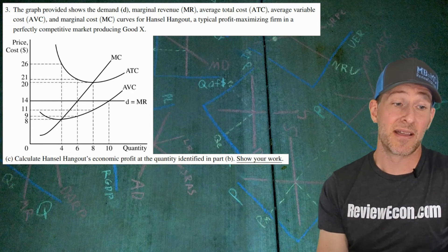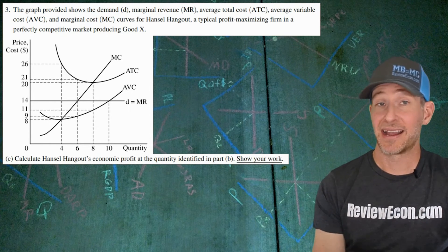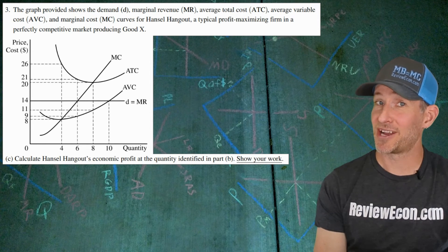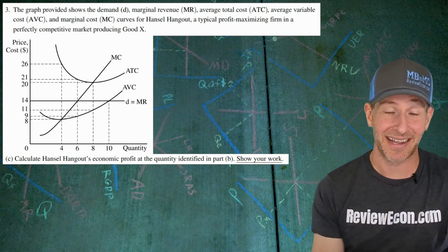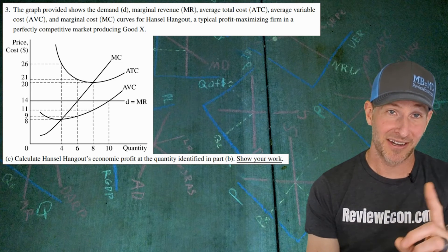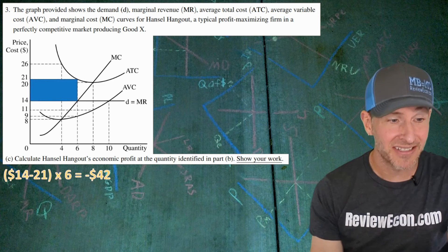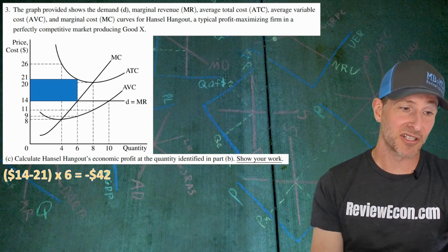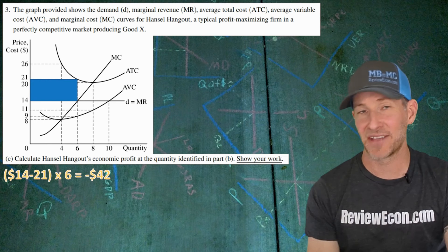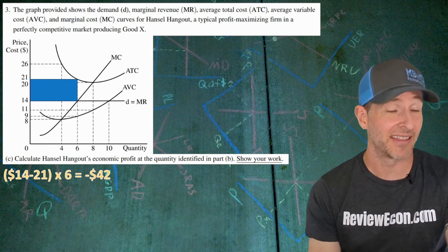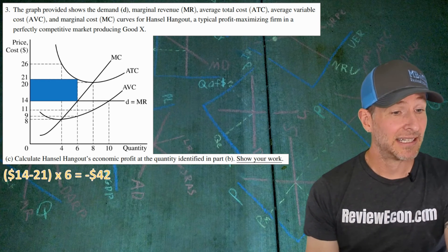Moving on to the next part, we're going to calculate the economic profit at the quantity that we just identified in part B. Now here's the tricky part. It's not very nice, College Board wasn't very nice here. It's not profit. This is an economic loss. Did you notice that? I hope you didn't get tricked. So we're calculating economic profit, but it's going to be negative economic profit. There is the area of economic loss here. It's $14 minus $21 times a quantity of 6. That is negative $42. I think if you identified it as $42 of loss, I think you'll probably be okay. But if you just said $42 positive, I don't think that's going to be enough.